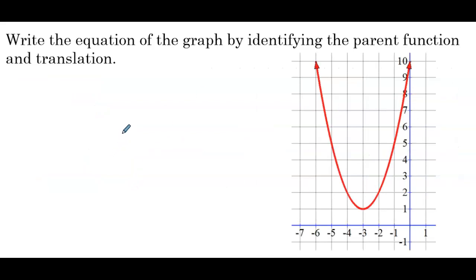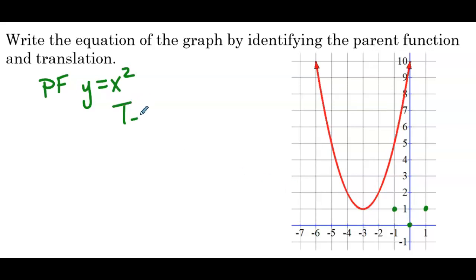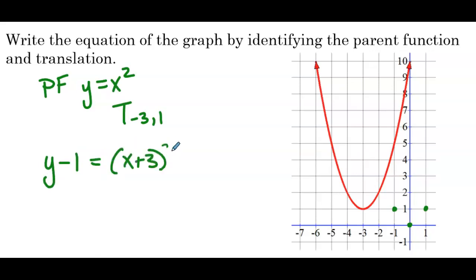Here the parent function is y equals x squared. Plotting 0,0 and 1,1 and negative 1,1, it looks like there's both a horizontal and a vertical translation — moved left 3, up 1. So translation is negative 3, 1: subtract 3 from x's, add 1 to y's. In our equation we do the opposite: subtract 1 from y and add 3 to x inside the parent function. In y equals form, we'd have y equals x plus 3 squared plus 1.